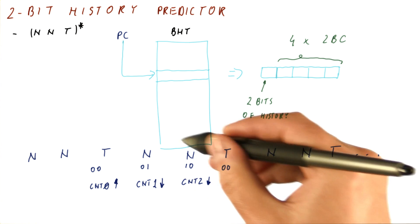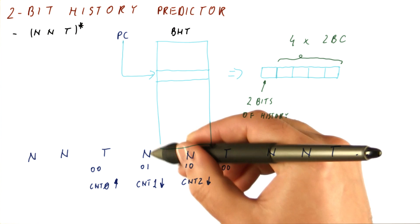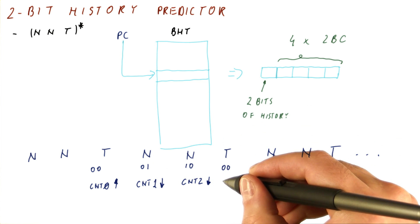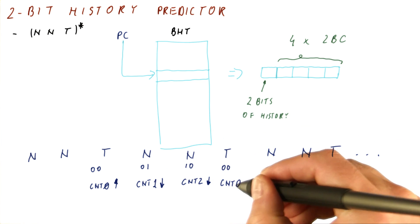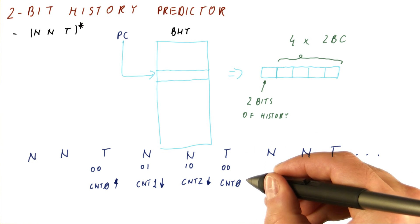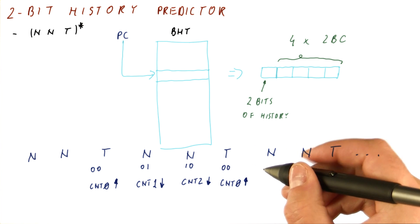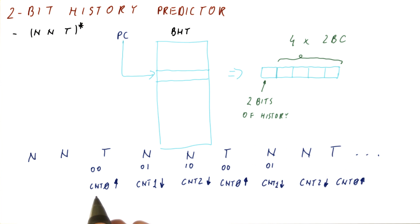For this, now we will again use the history of 0, 0, because the last two outcomes have been not taken. This means that the counter number 0, because of this taken decision, will be incremented, and so on. As you can see, counter 0 always counts up. So very soon it will start predicting taken, which means every time we see a history of 0, 0, we will start predicting strong taken.